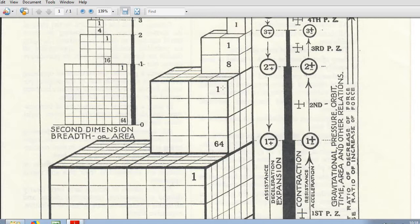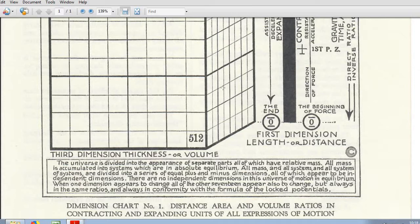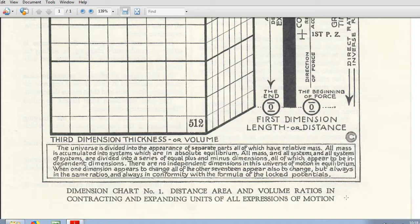Dimension chart number 1, distance, area and volume ratios in contracting and expanding units of all expressions of motion. That means all of physicality.